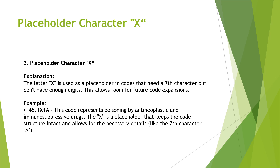Next, we'll understand the placeholder character X. X is used as a placeholder in codes that need a seventh character but don't have enough digits — this allows room for future expansion. For example, T45.1X1A: in the future, that 1X might change to 1X2 or 1X3. We don't know, so they keep X as a placeholder for future expansion.